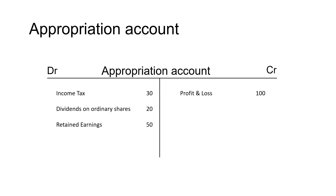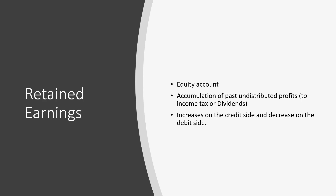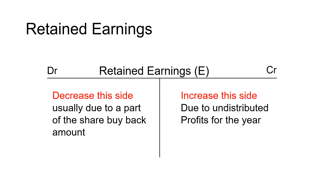Retained earnings serves as a reserve account, or savings account. It represents the accumulation of past undistributed profits — the balance remaining after distributing profits for the year to income tax and dividends is kept in retained earnings and can be used in future years for other projects. Retained earnings is an equity account and increases on the credit side when there are undistributed profits. When this cash is used in later years, it decreases on the debit side, such as when the company buys back shares from shareholders.